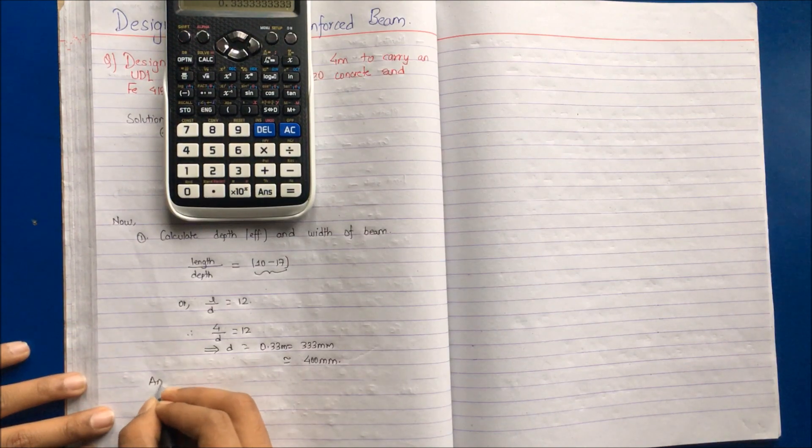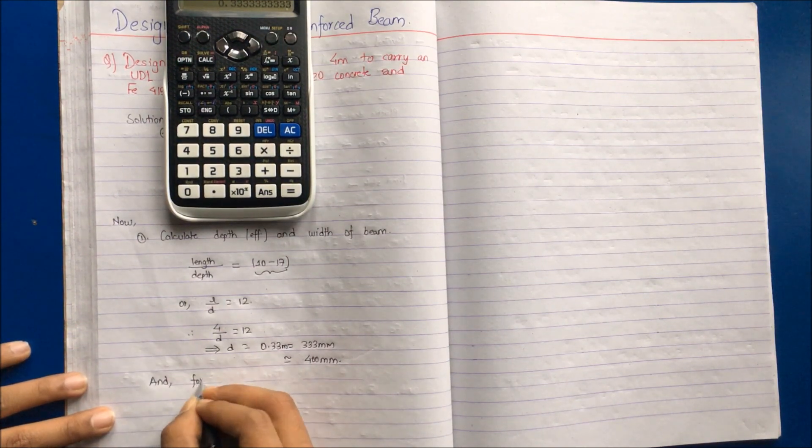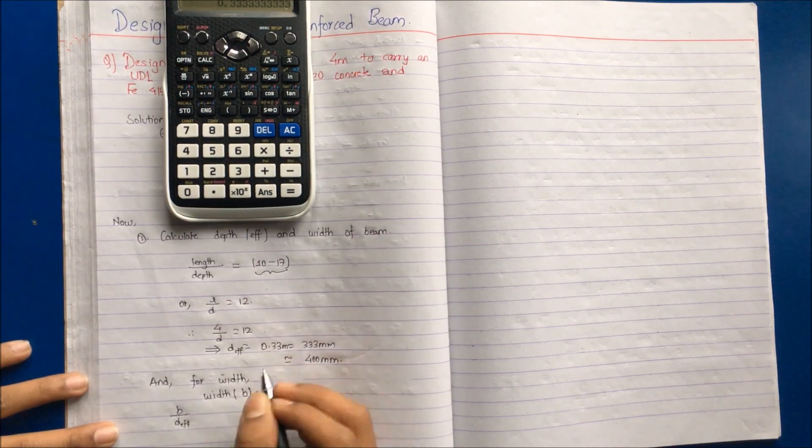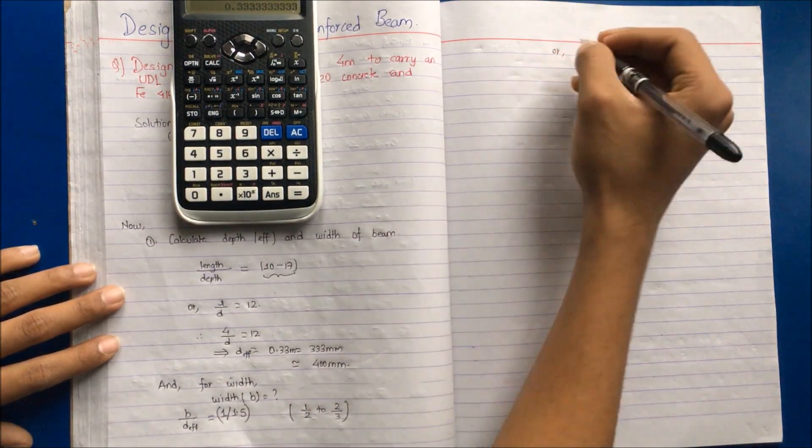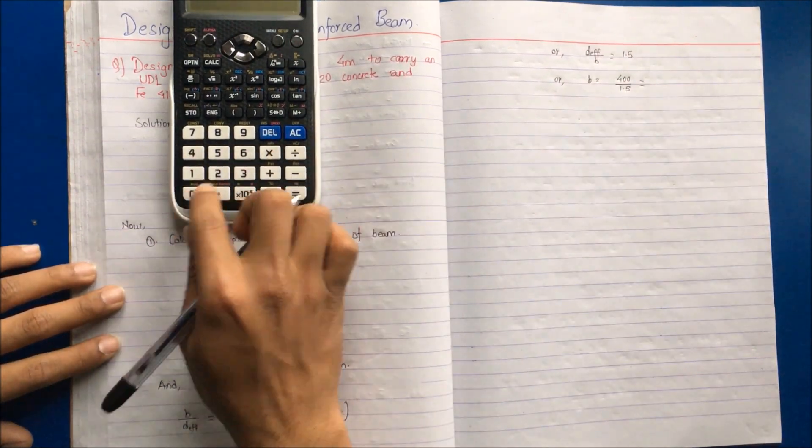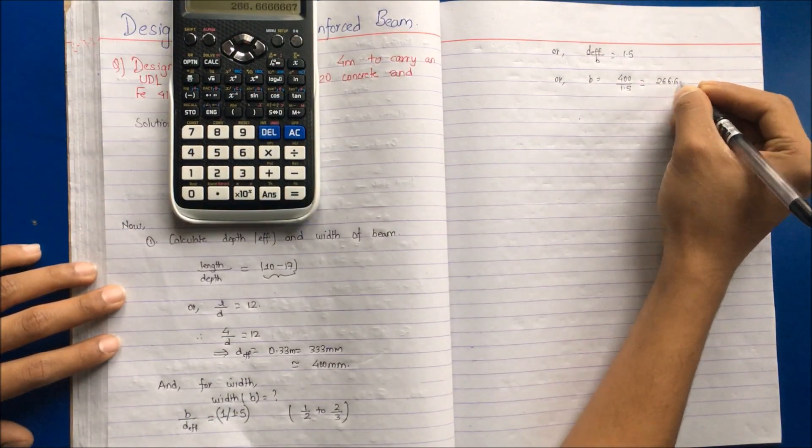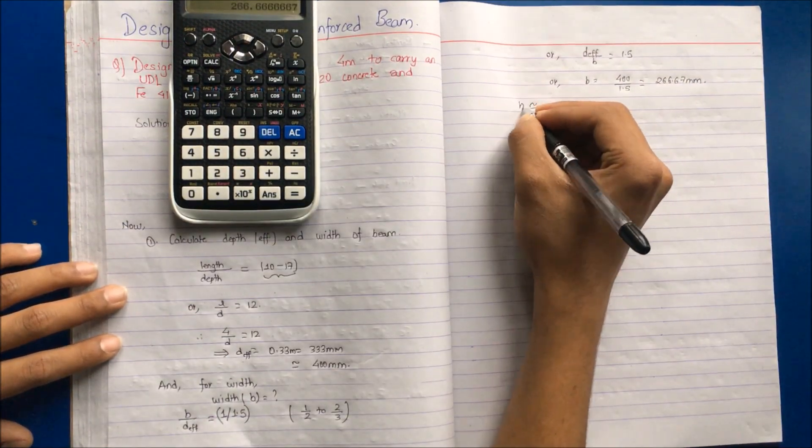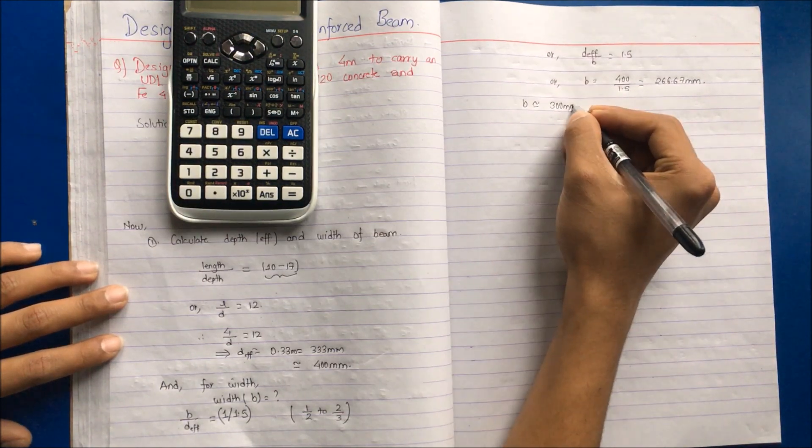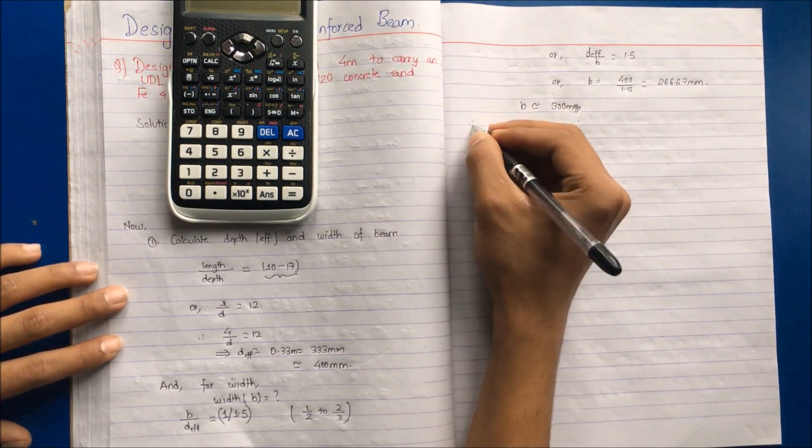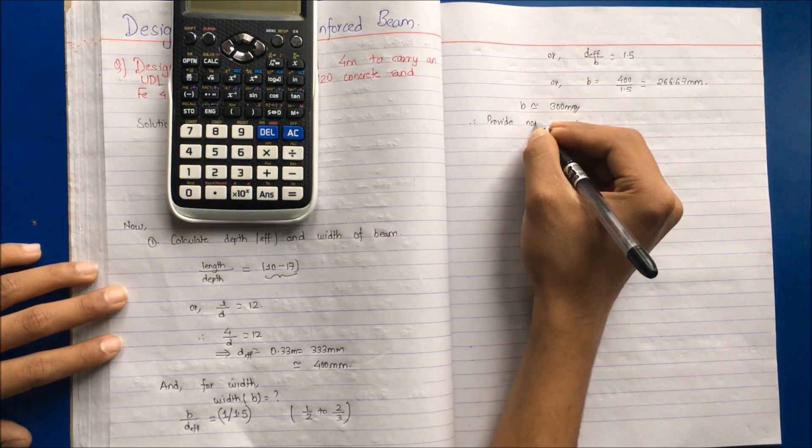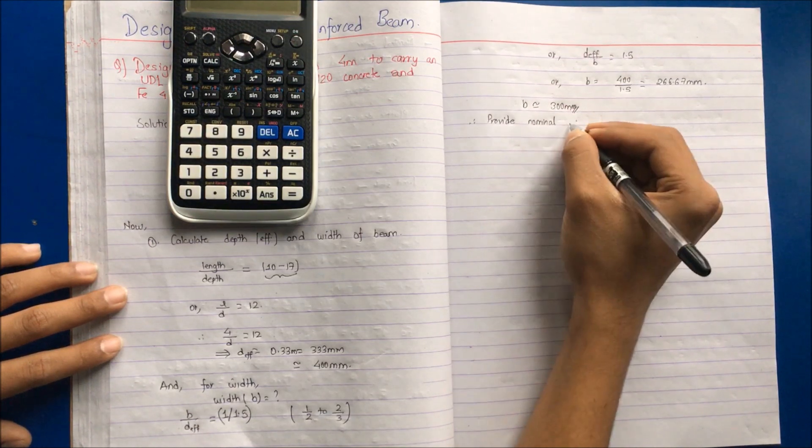And now for width, the ratio of width to depth is taken. Width to depth is equal to 1 by 1.5 and it ranges from 2 by 3 to 1 by 2. D effective by B is equal to 1.5. B is equal to 400 by 1.5. This comes to be 266.67 mm. And B can be nearly taken as 300 mm. Make sure you take value greater than 266.67 or the calculated value, because if I provide with 260, then the ratio of depth to width does not lie in the range.